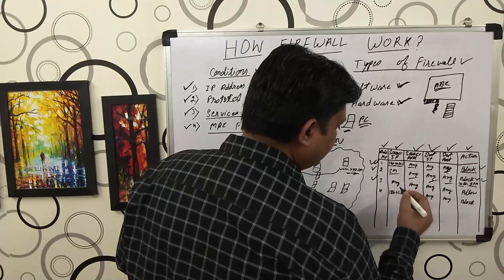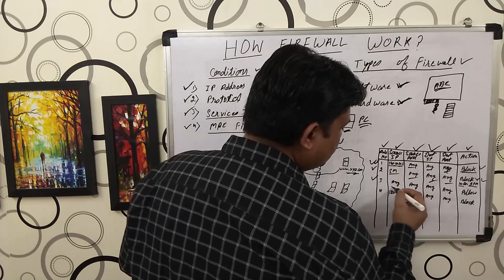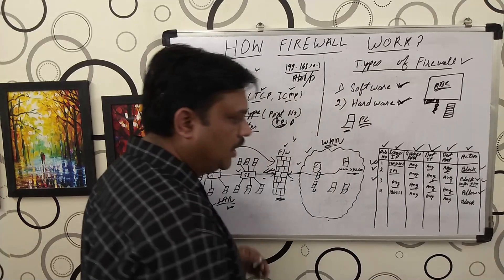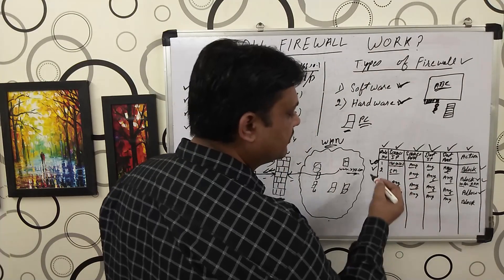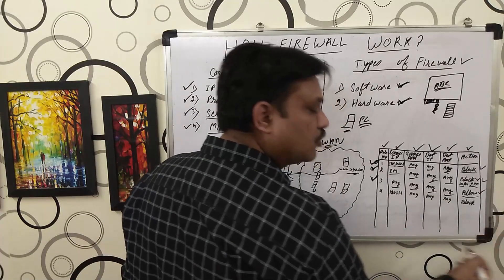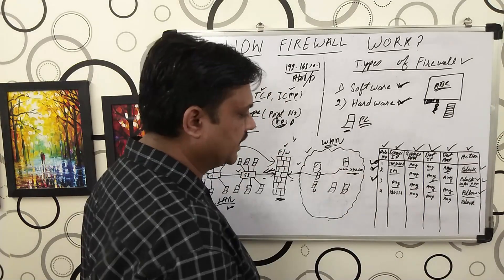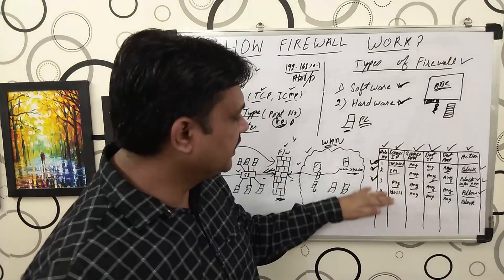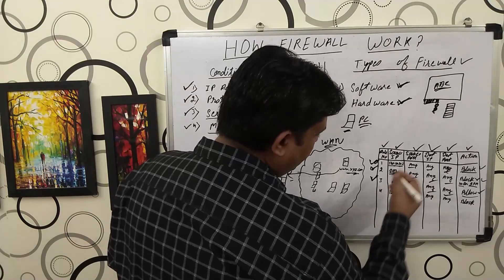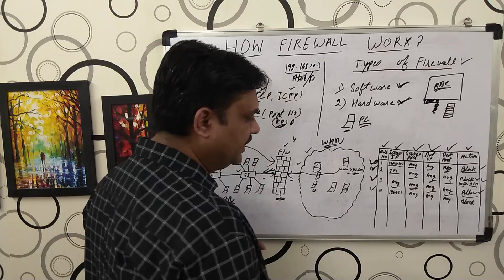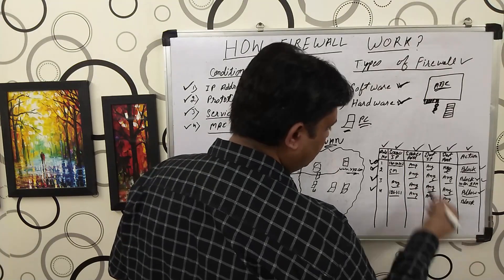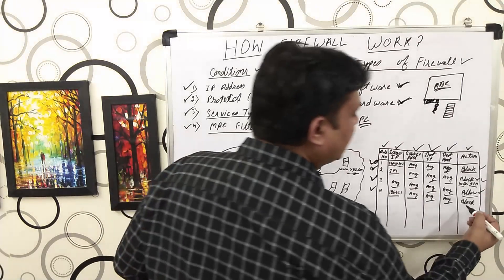So you need to add a permit condition — source IP any, source port any, destination IP any, destination port any, action: allow. This means if rule one doesn't match, check rule two; if not, check rule three which says allow, and the traffic is permitted into your local area network. Now, if you later add rule four — with a new block condition — and place it at position four, there is a critical problem to understand.